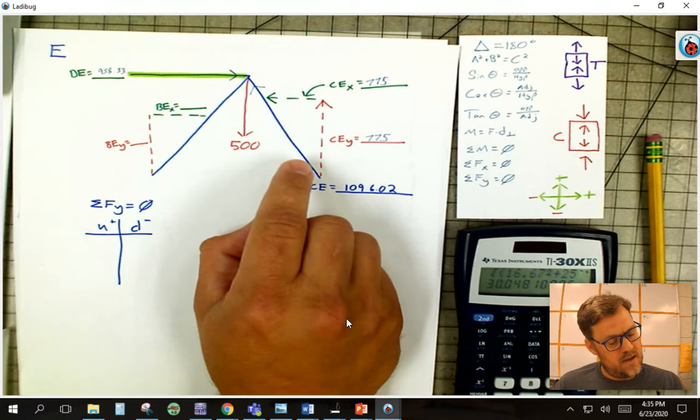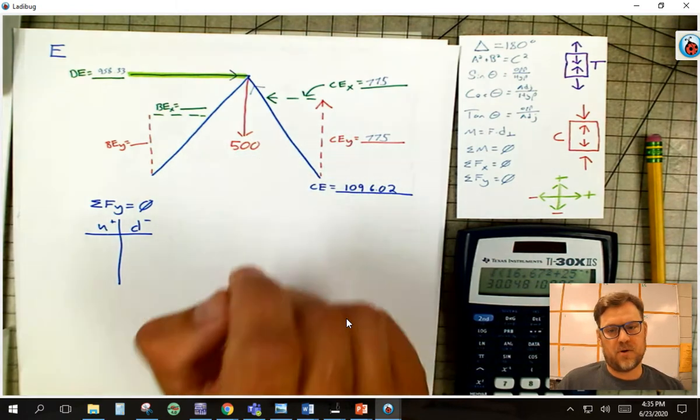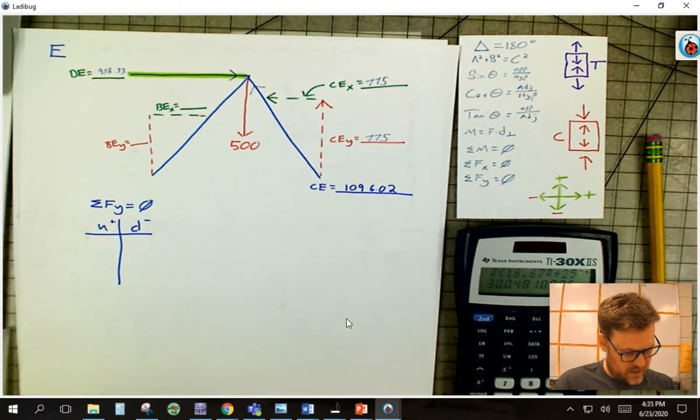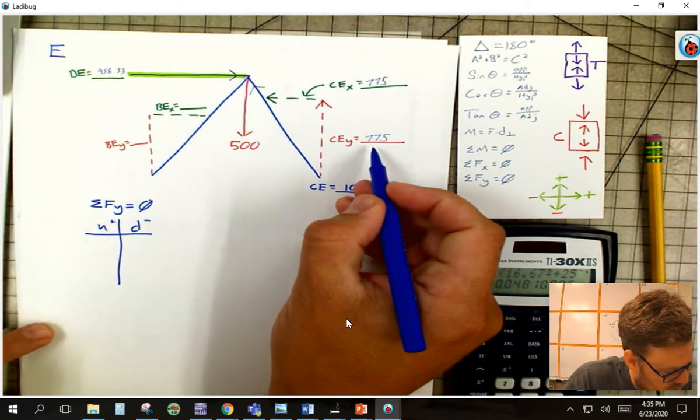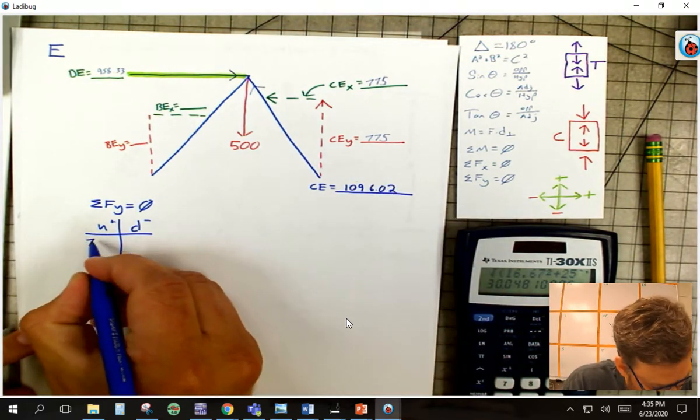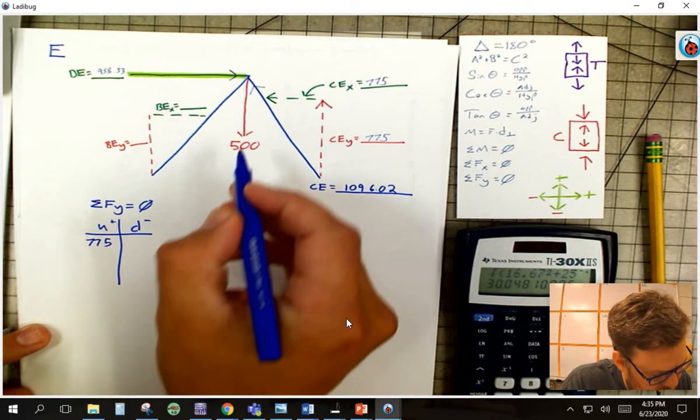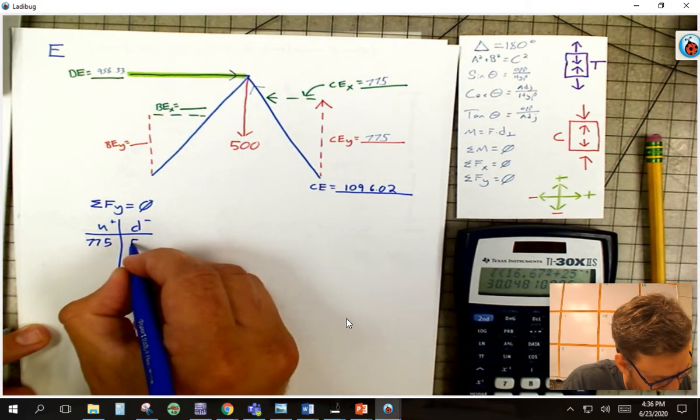Okay, if I know two of them, I can solve for the third. Now, let's look at that. This guy here is going up, 775. This guy here is going down, 500.